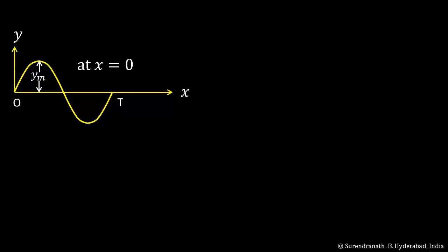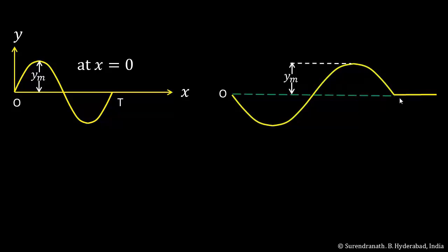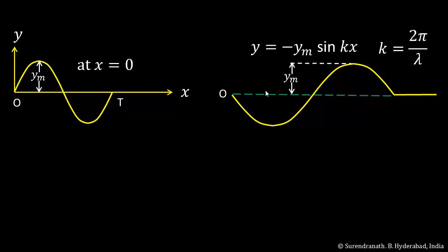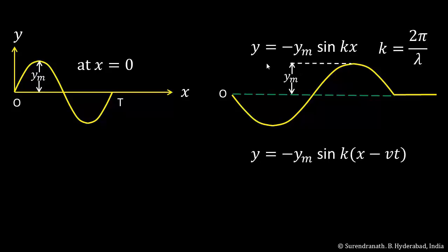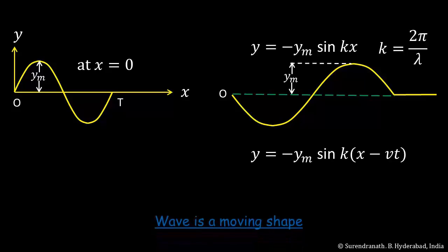If the oscillation at the left end of the rope is ym sin(ωt), the corresponding shape shows a left-right reversal. The equation for this shape is y = −ym sin(kx), where k = 2π/λ is the wave number — a measure of the repetitivity of the function, with kx increasing by 2π for every lambda. The equation for the moving shape is then obtained by replacing x with x − vt, giving y = −ym sin(k(x − vt)). This is how you can view the wave as a moving shape.